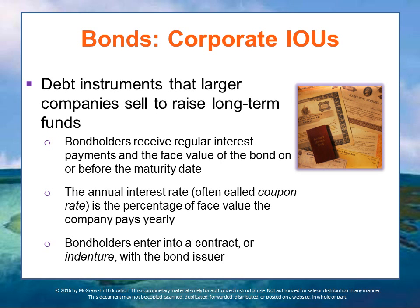Much long-term debt takes the form of bonds, which are debt instruments that larger companies sell to the market to raise long-term funds. The buyers of bonds — bondholders — loan the issuer cash in exchange for regular interest payments until the loan is repaid in full upon a specified maturity date. The bond contract, or indenture as it's called, specifies the terms of the agreement. The face value of the bond is typically $1,000 as its initial sales price. The annual interest rate, often called the coupon rate, is the percentage of face value that the company pays its bondholders yearly.